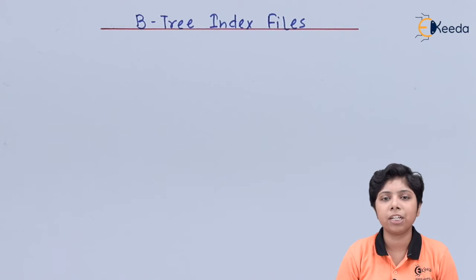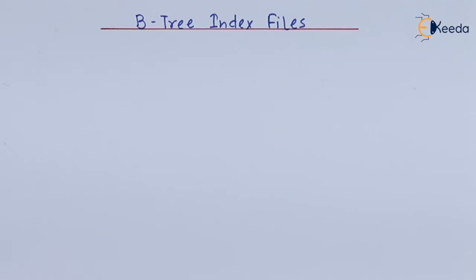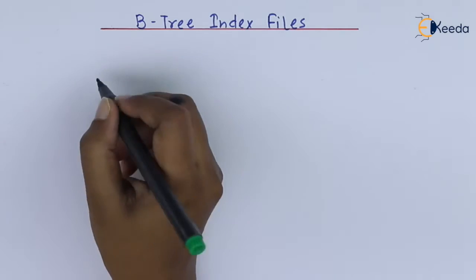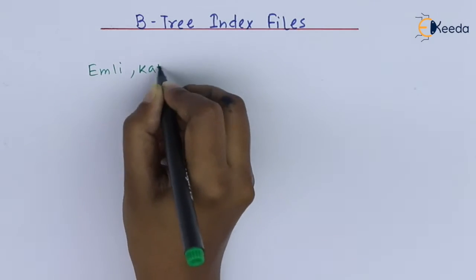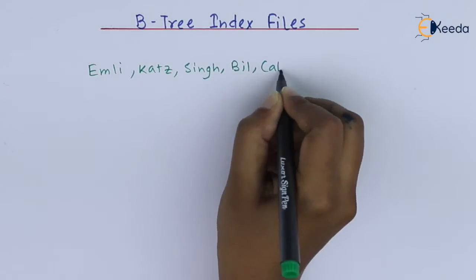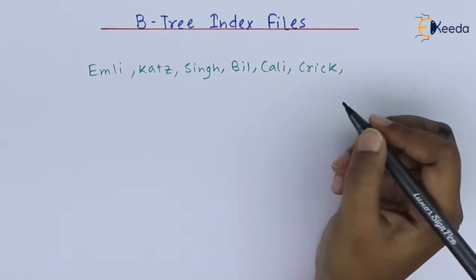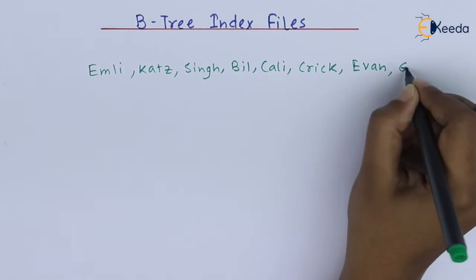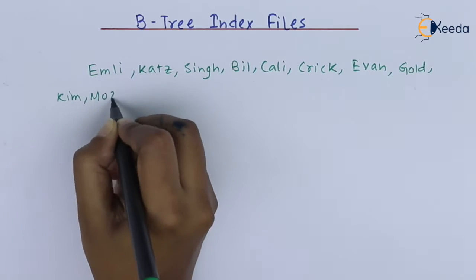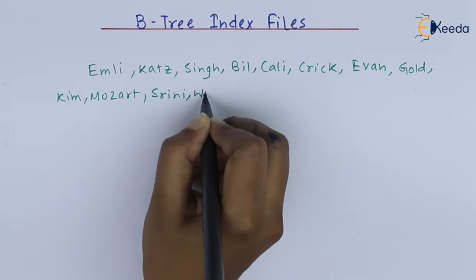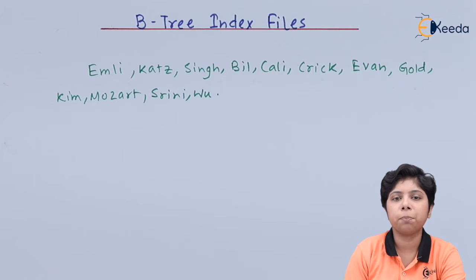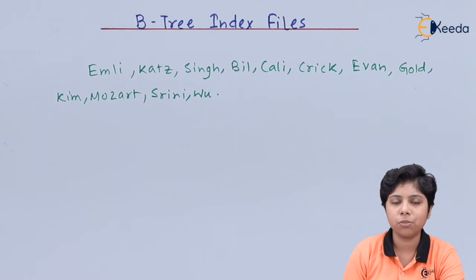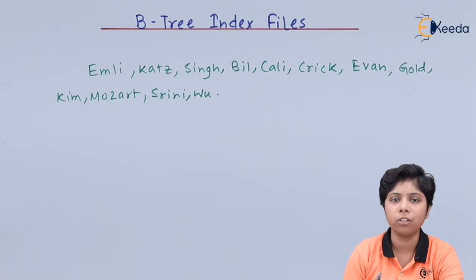Now we will see how we can convert a B plus 3 to a B3. We will construct a B3 with pointer order 3, meaning we can refer to at most three values inside a leaf node or a non-leaf node.